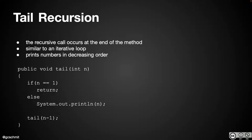Then we call tail with n minus one. So if we pass in a value of five, this is going to print five and then make the recursive call, print four and make another call, and so on — eventually printing the numbers five, four, three, two, one. That's called tail recursion: the recursive call is at the tail, the end, of the method.